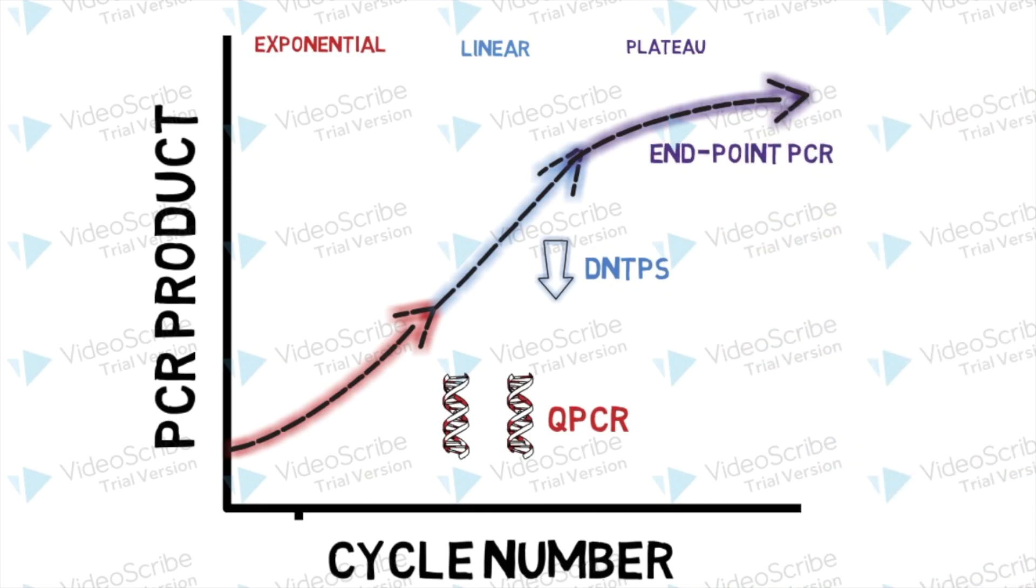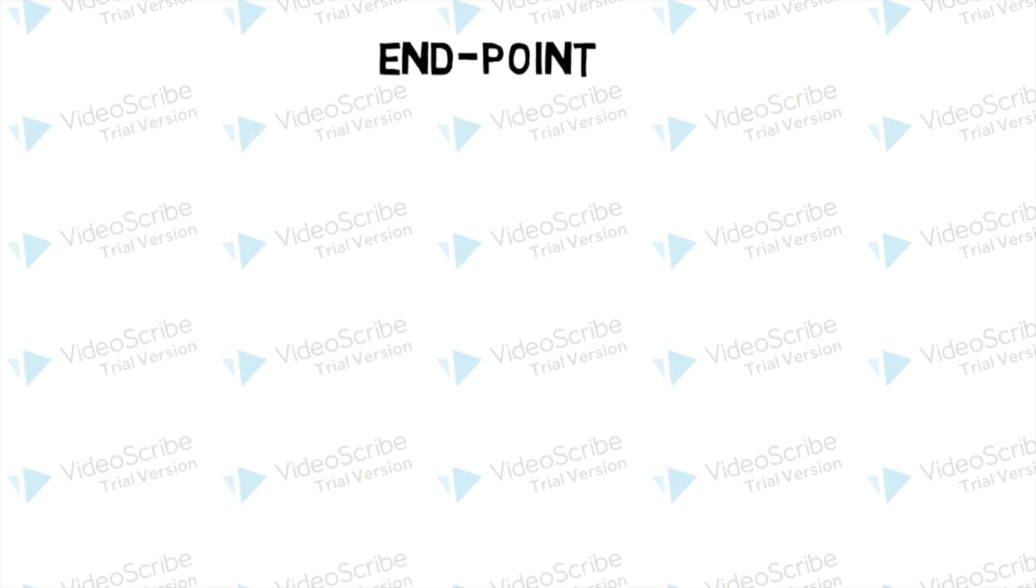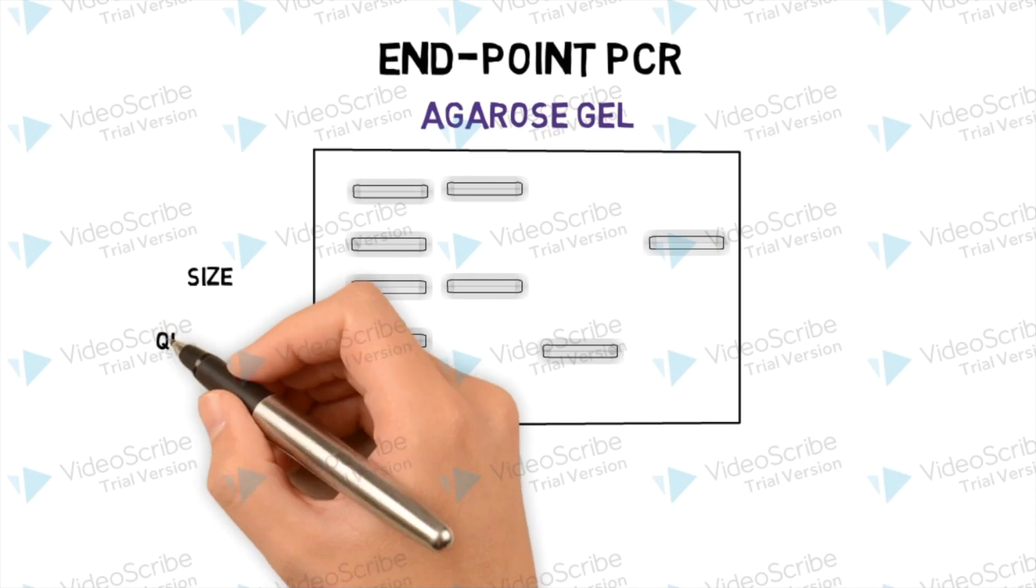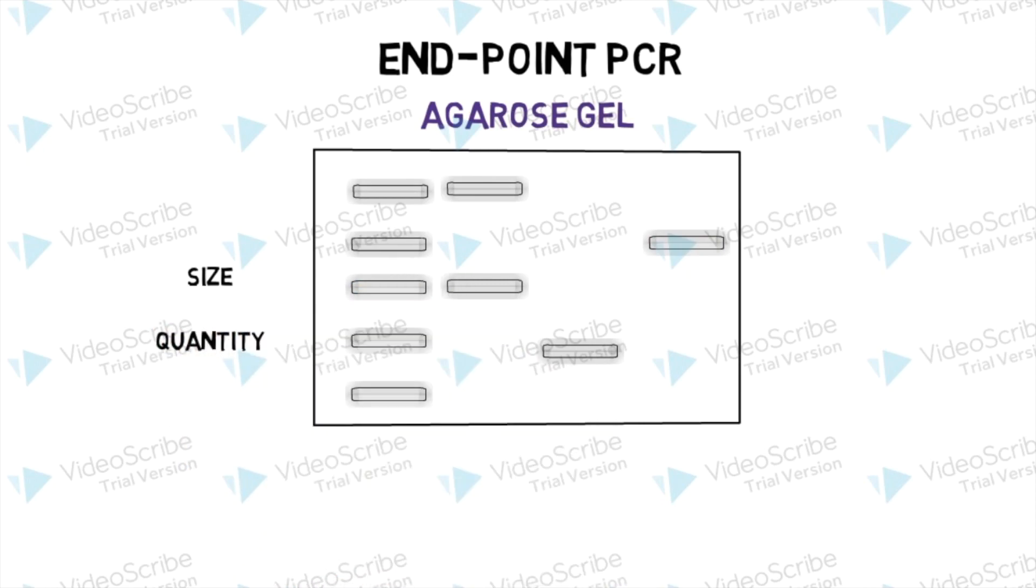Following a reaction, endpoint PCR uses agarose gels to visualize and determine the size and relative quantity of PCR products. The use of agarose gels can be a time-consuming process.